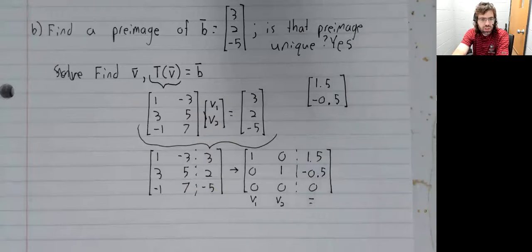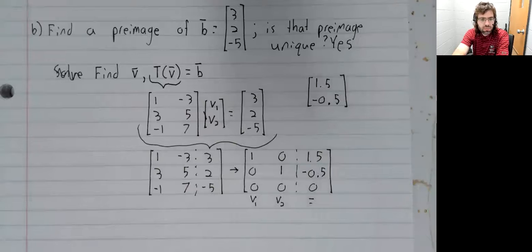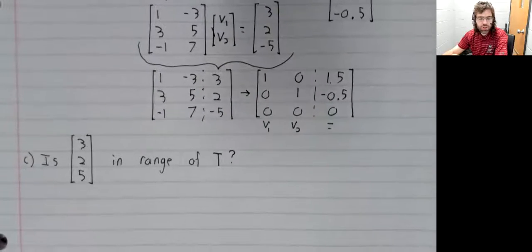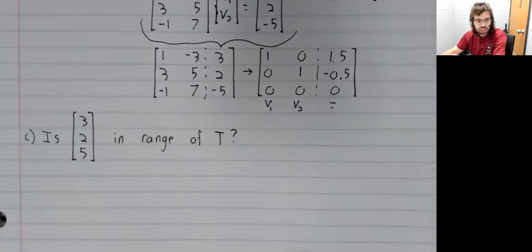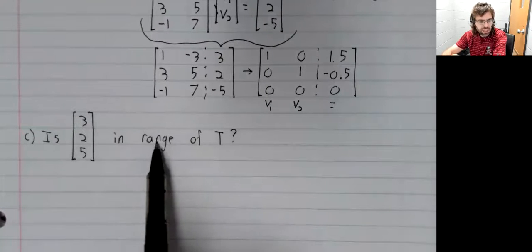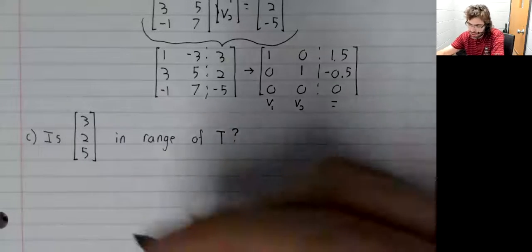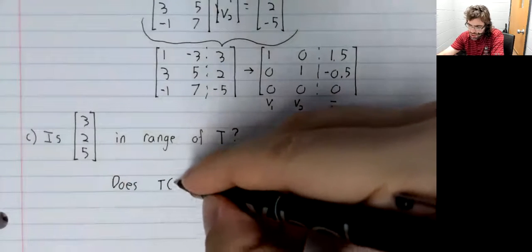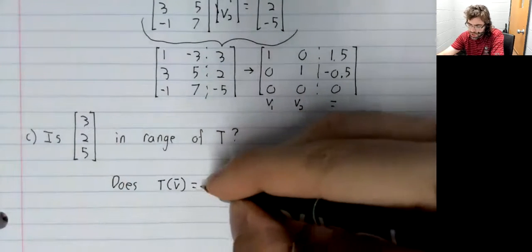Closely related to pre-images are questions relating to range, because a vector has a pre-image if and only if it is in the range of the linear transformation.